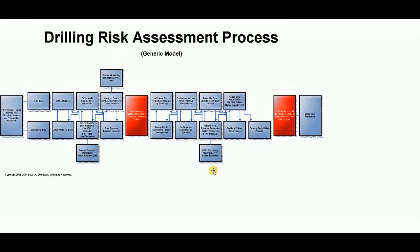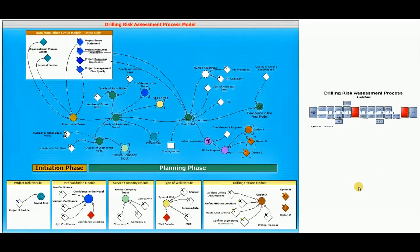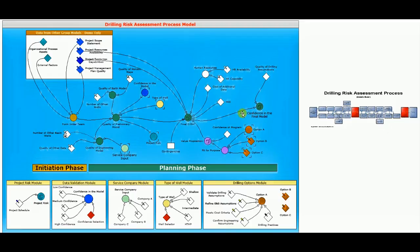I want to take a quick look at the model itself. The user would not typically see this view, but this is the model itself. You'll notice the drilling process is shown again, and in the model it covers the initiation phase and the planning phase — tying back to the PMI PMBOK processes. You can see all the different variables, and each of these can have a relationship. These lines are simplified for visualization purposes, but there could be many more interdependencies.